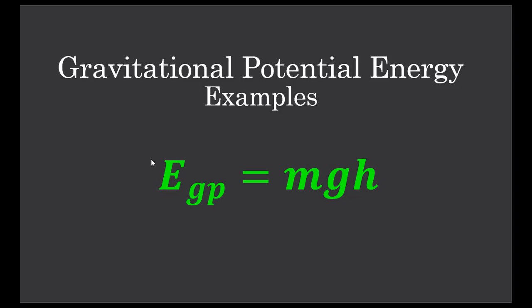So EGP: capital E represents energy, subscript GP means gravitational potential, measured in joules of course, because it's energy. Mass is measured in kilograms. And G for gravity — the gravitational field strength, to be correct — is measured in newtons per kilogram.